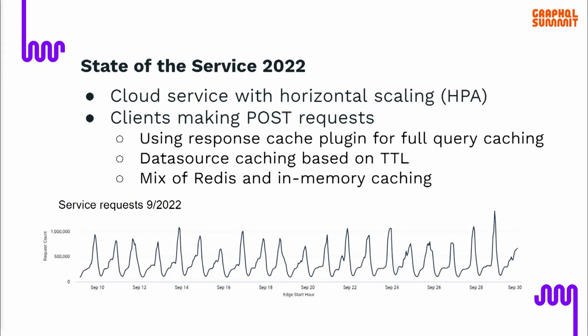Near the end of the 2022 season, this was the state of the service. We're running on the cloud, relying on HPA — Horizontal Pod Auto Scaling — to scale up services during peak times. Most clients were making POST requests, and we were using the response cache plugin to store full response queries, as well as data source caching based on the TTL of the data sources. We had a mix of Redis and in-memory caching, and this was all working pretty well.